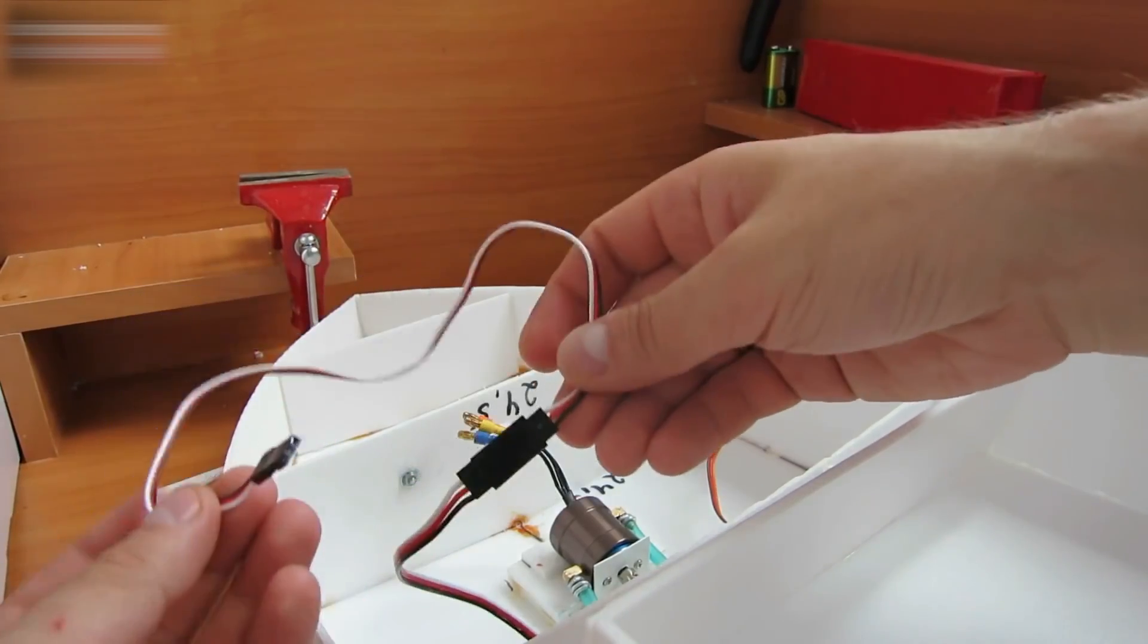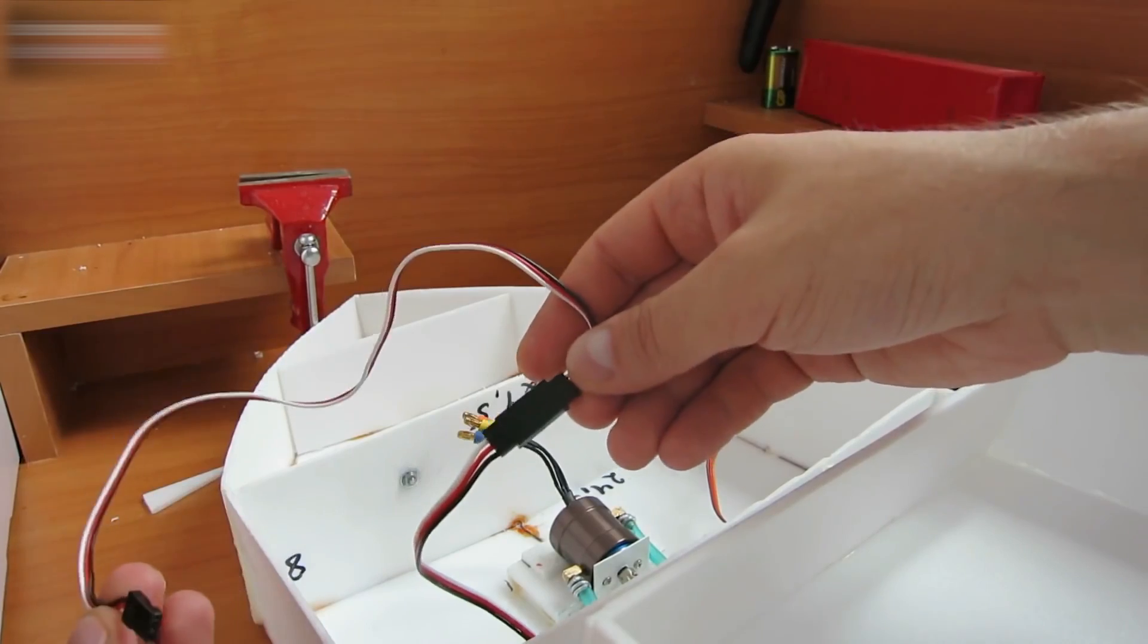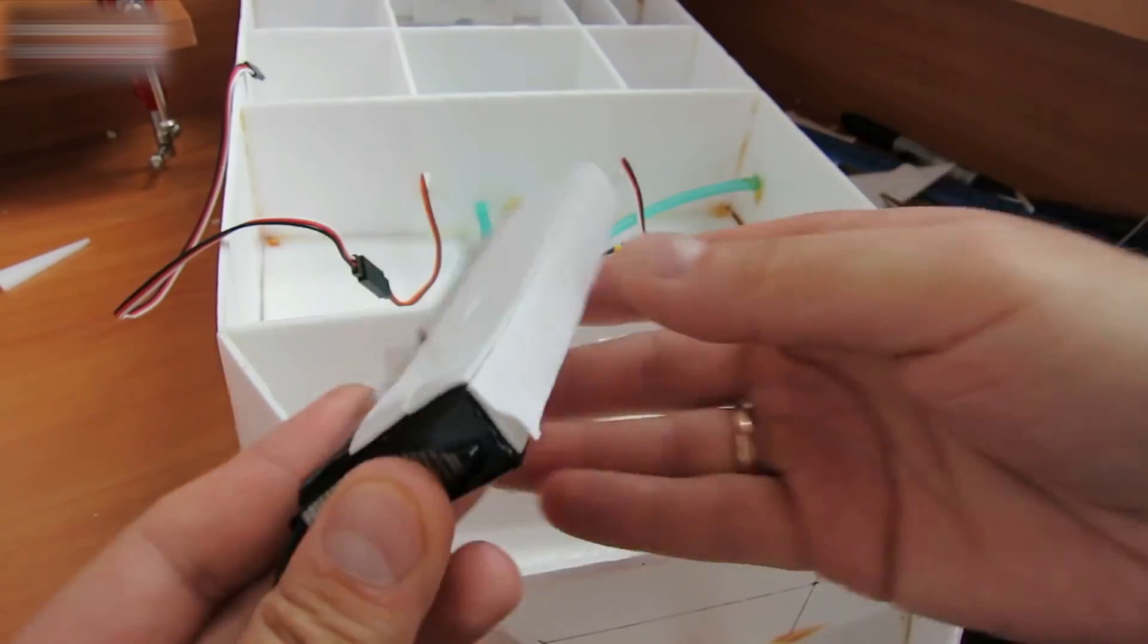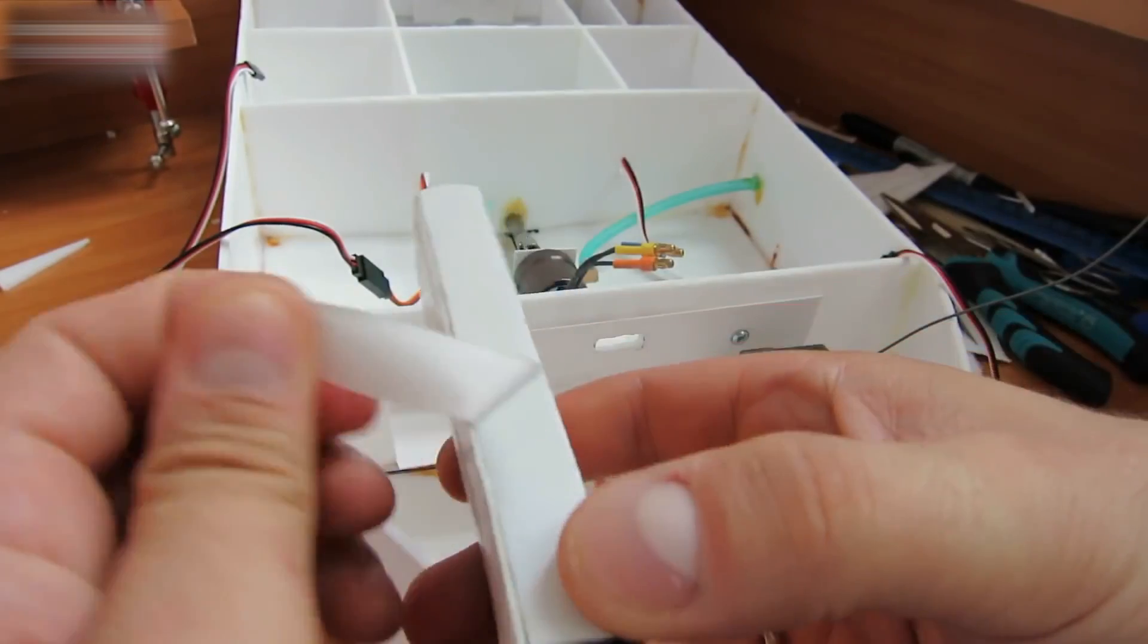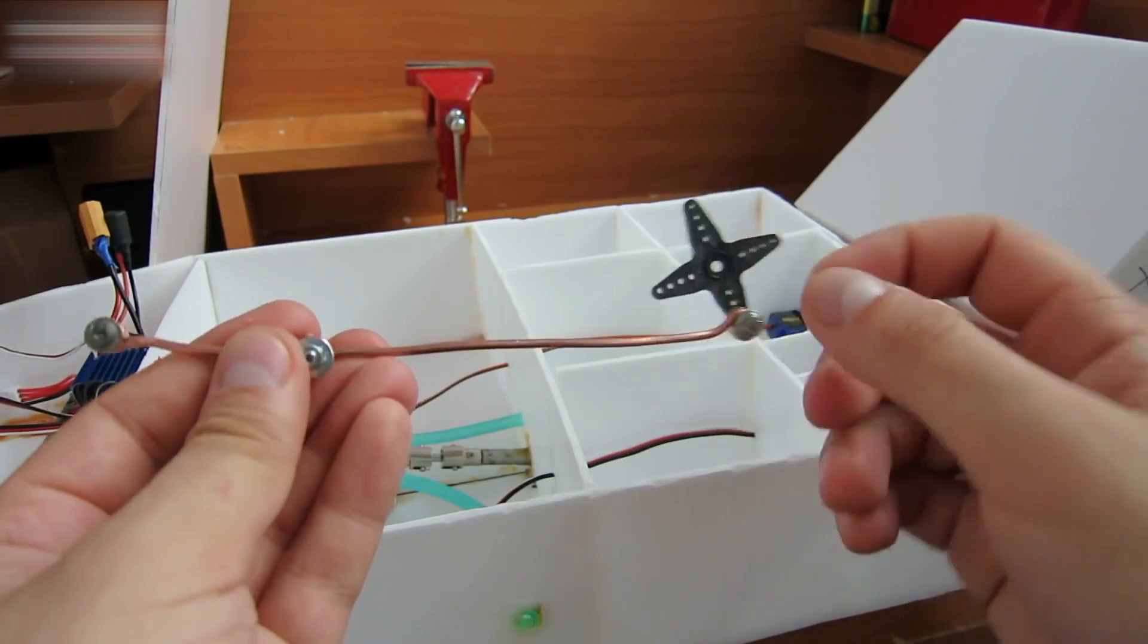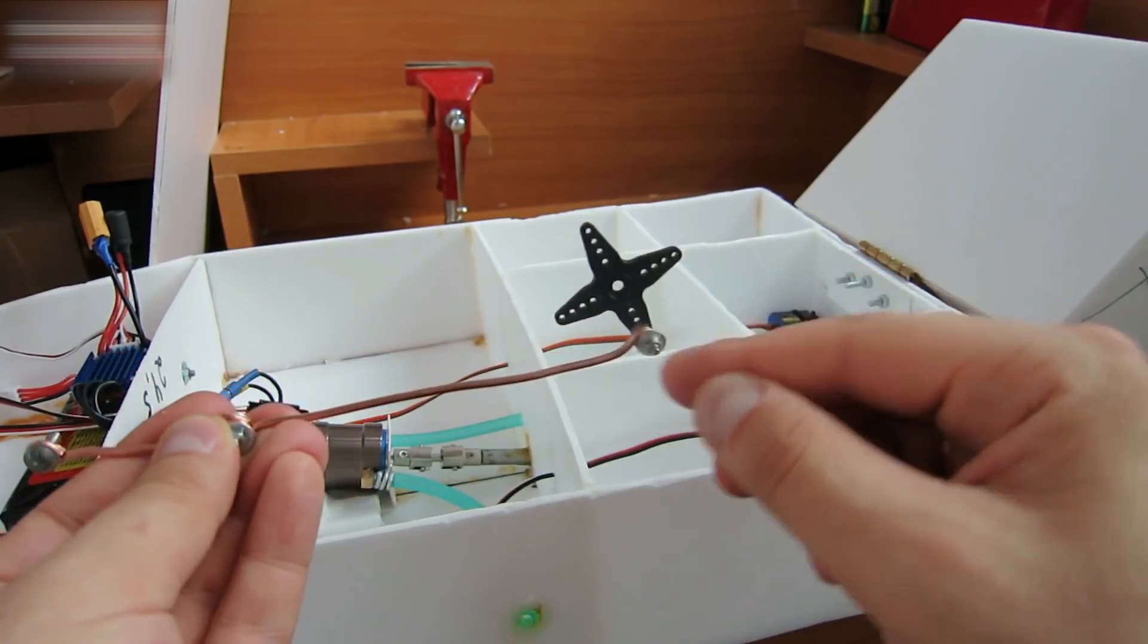We need extensions for the servos, the links for them and all other equipment are in the video description below. Attach all the electronics to the bow part with the two-sided tape. Bend the copper wire into a ring at the ends and fasten it firmly to the servo arm with a screw.